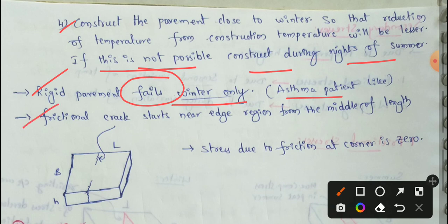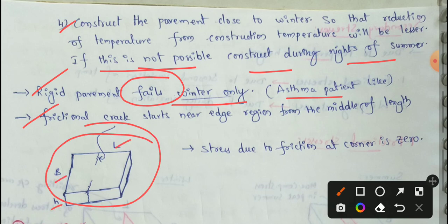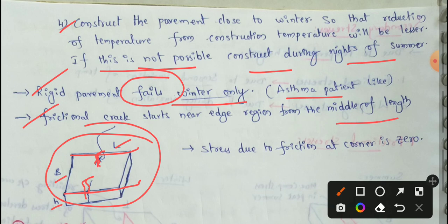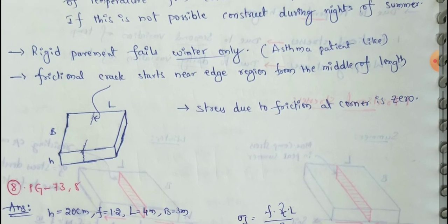Frictional cracks occur in the middle of the length of the rigid pavement, in the edge region. Frictional cracks act at the middle half-length region. The stress due to friction at the corner is zero — at the corner point, stress is zero.